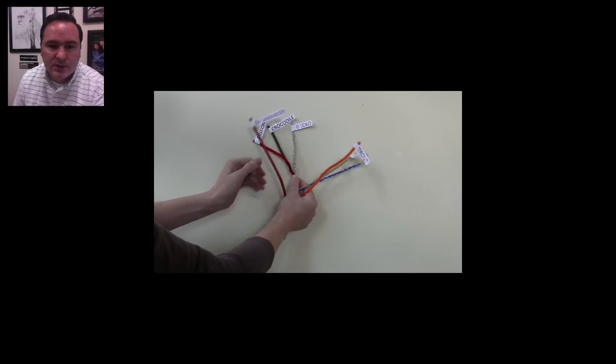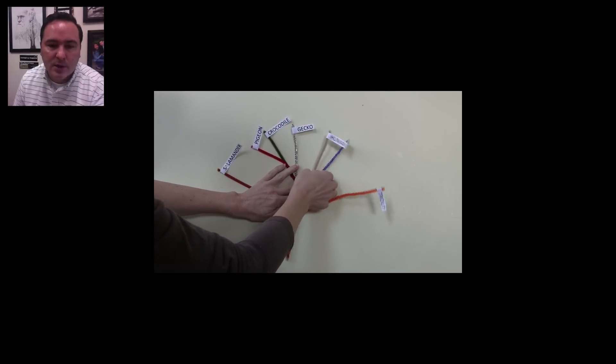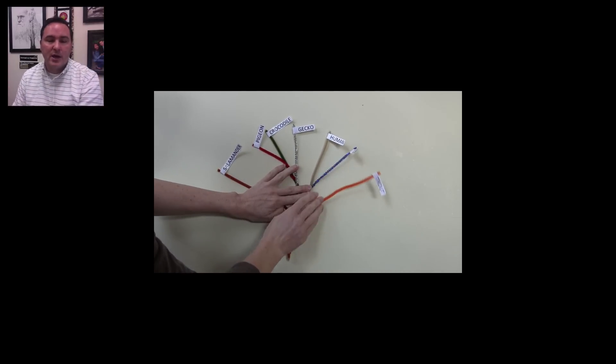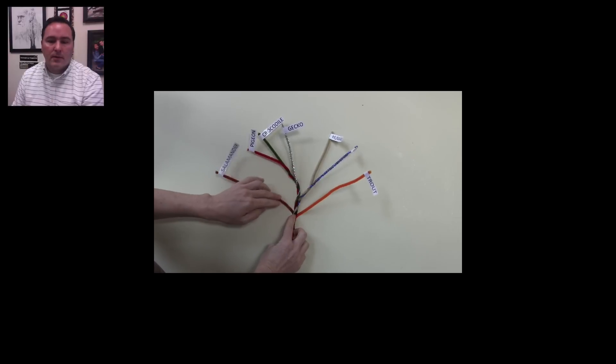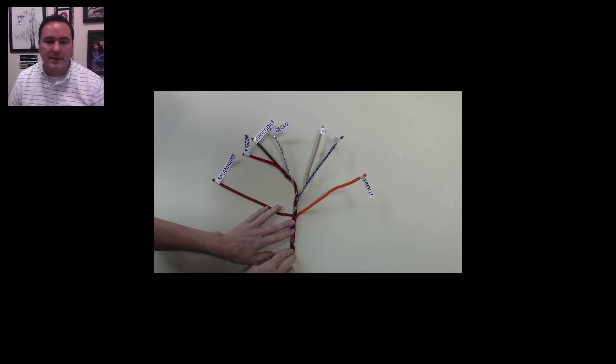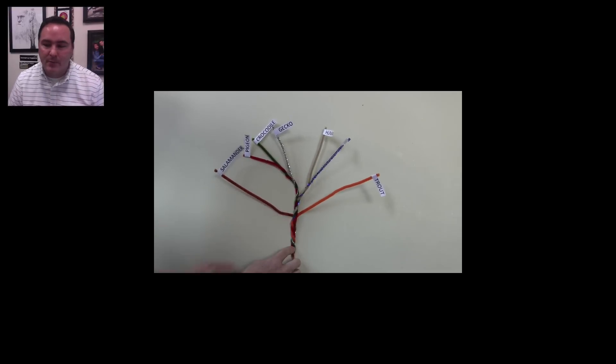Once we get done with this, you can see that we now have the clade race, where we have all of the organisms with their relationships to each other. And that's the final tree with pipe cleaners.